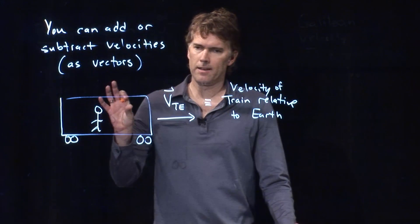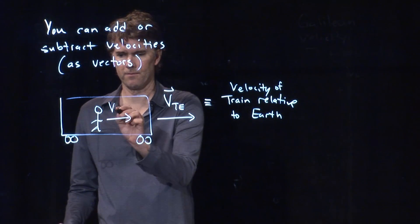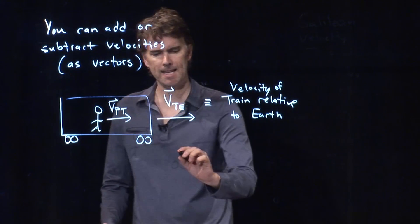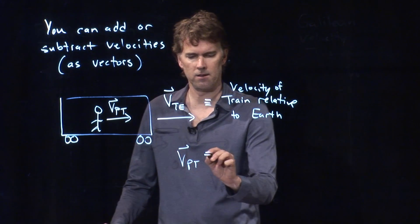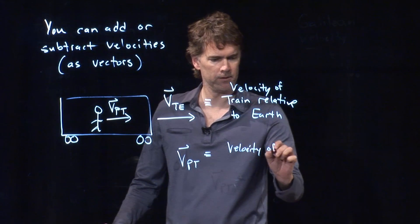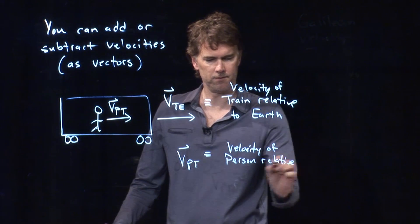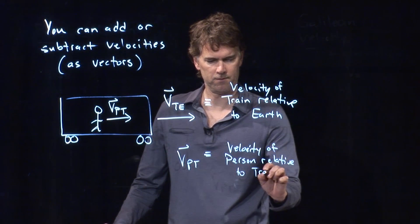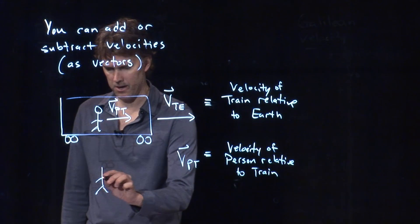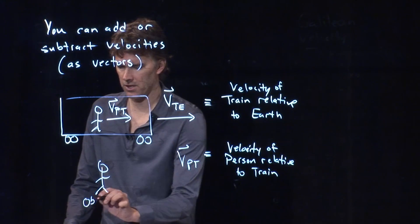And now we have a velocity of the person relative to the train. So VPT is the velocity of the person relative to the train. But what we really want to know is what does somebody out here observe?